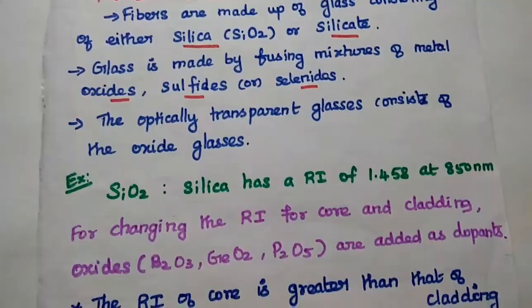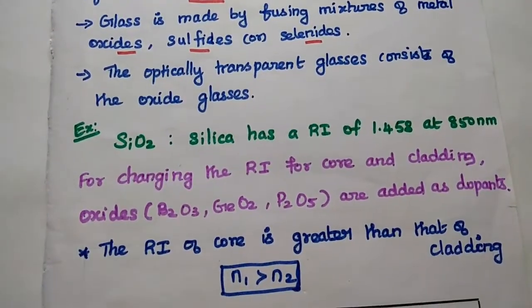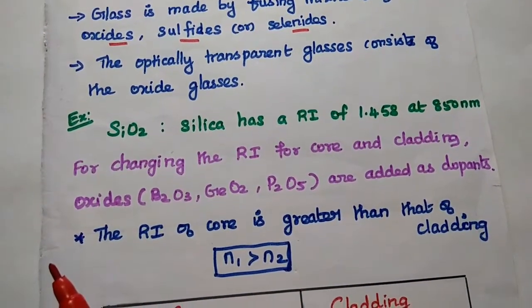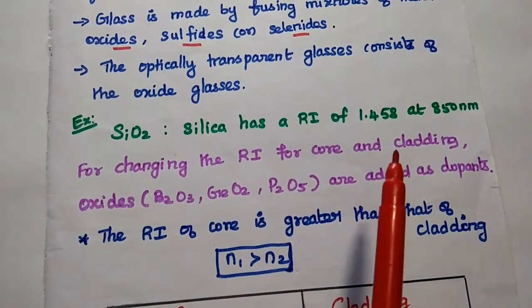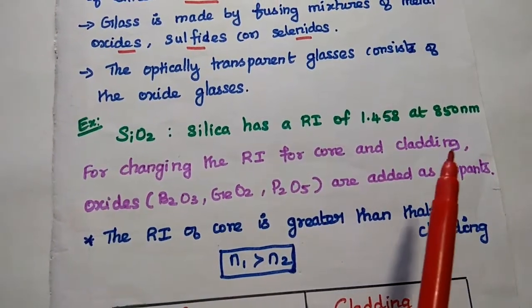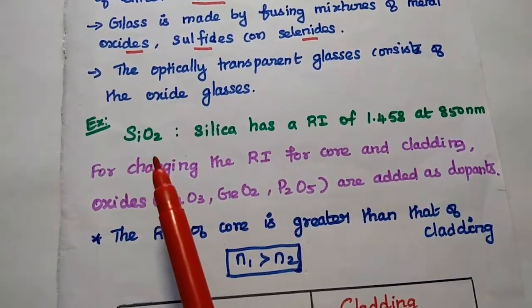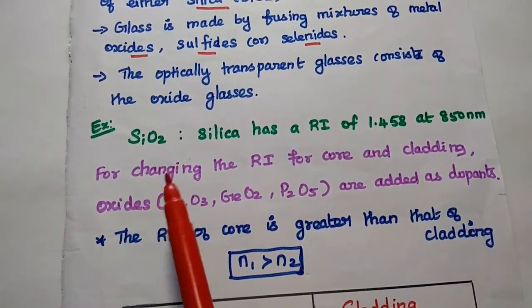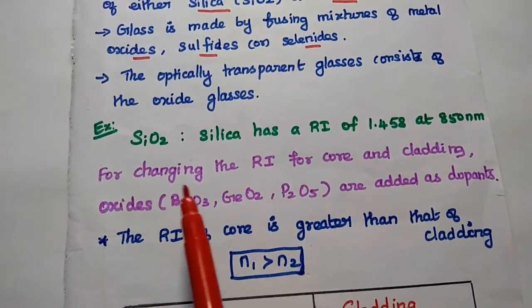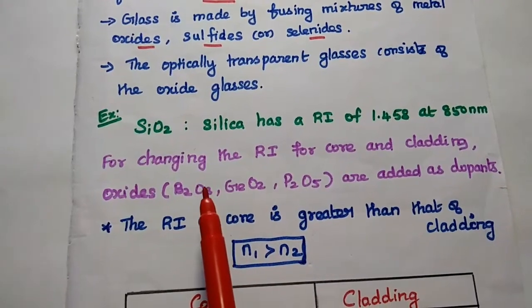So here we can take the example. Silicon dioxide has a refractive index of 1.458 at 850 nanometer. So this is widely used in this glass material. If you want to change the refractive index for core and cladding, we need to add oxides as dopants.